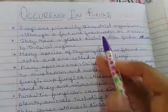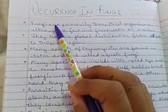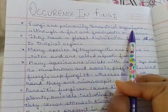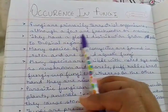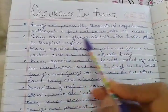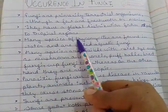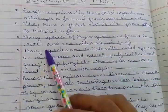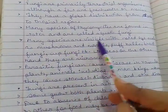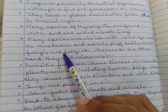Hi everyone, welcome back to my channel. In this video we will discuss the occurrence in fungi. Fungi are primarily terrestrial organisms, but are also found in fresh water and marine environments. They have global distribution for polar and tropical regions. There are many species like phycomycetes and aquatic fungi found in water.